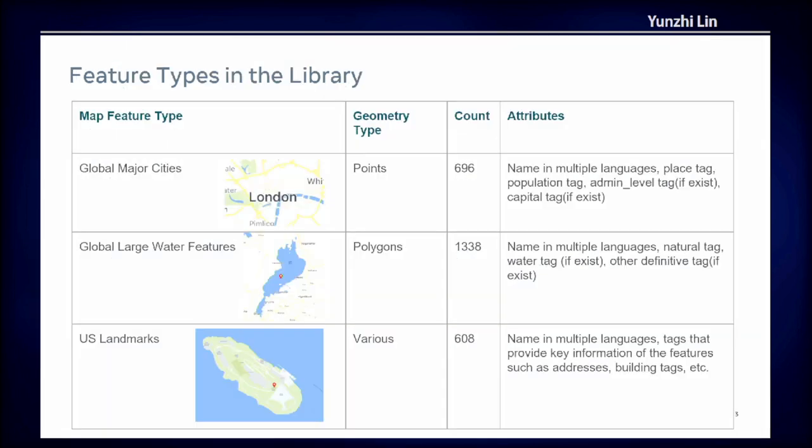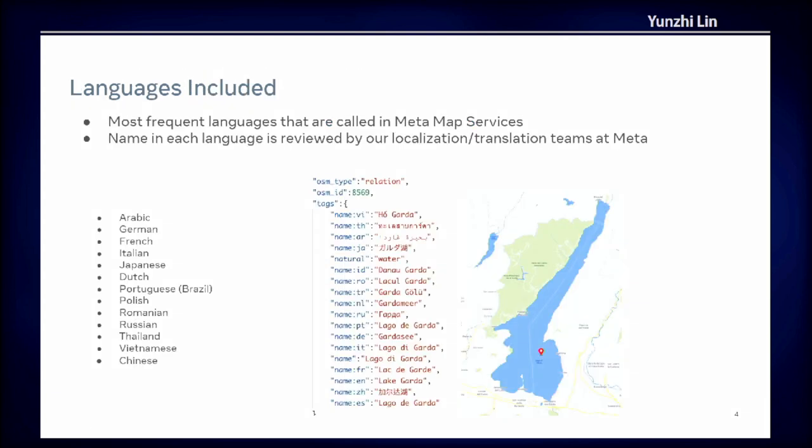For the dataset part, there are three types of map features included: global major cities, global large water features, and US landmarks. Each of these map features includes names in multiple languages, and tagging provides key information about the features. The languages chosen are the most frequent languages called at Meta map services, and each name is reviewed by our localization team at Meta before being added to the library.